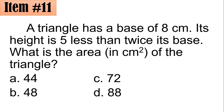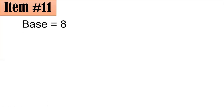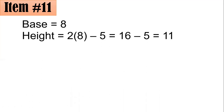Let's see which is correct. So from here, if the base is 8, and since the height is 5 less than twice the base, then your height is 2 times 8 minus 5, which is 16 minus 5, or 11.